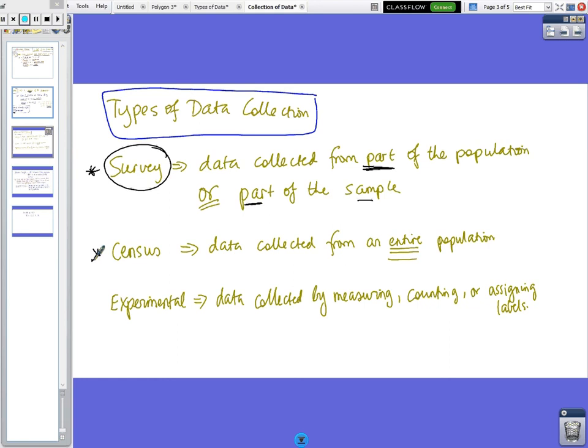A census, which we just had this year in 2016, is data collected from the entire population. So we had a census in Australia because everyone had to do it.